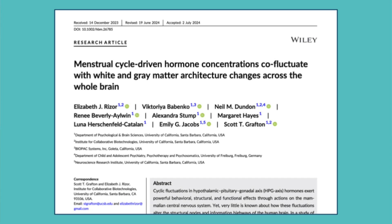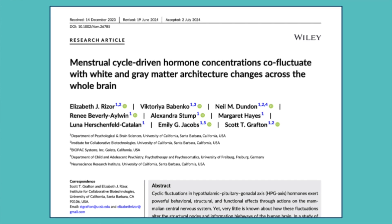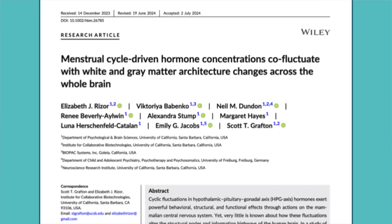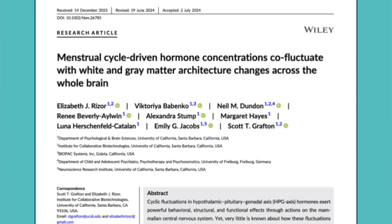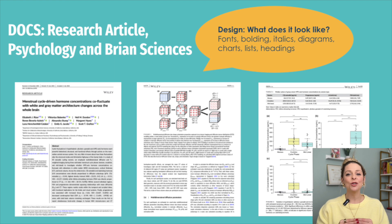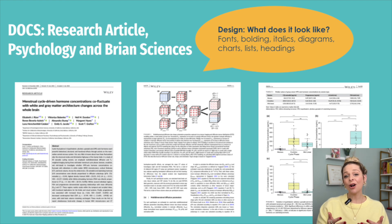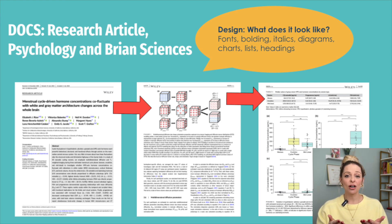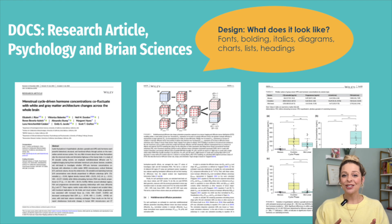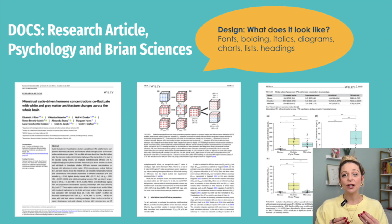Now let's take a look at a sample research paper from psychological and brain sciences. Starting with Design, you can see that the title, authors, headings, and subheadings are all listed in bold. You can also see that diagrams and charts are used to present models and data. It can be helpful to analyze model papers in your own field and see how authors use visual elements.